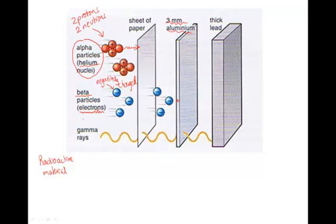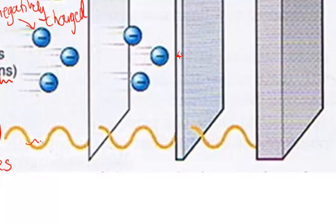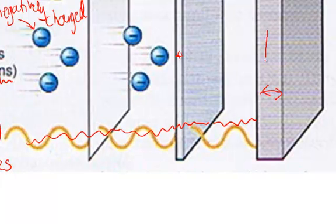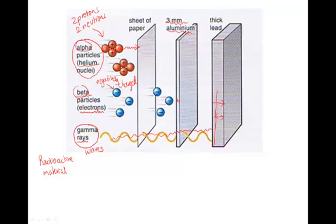The third type of radiation from an atomic nucleus is gamma rays. Gamma rays are waves — they are not particles like alpha and beta. These are very penetrating: they'll go through sheets of paper with no problem, and even through a three-millimeter sheet of aluminium. They can be stopped by lead, but it needs a thick lead slab — just a few millimeters of lead won't stop them; you need quite a thick slab.